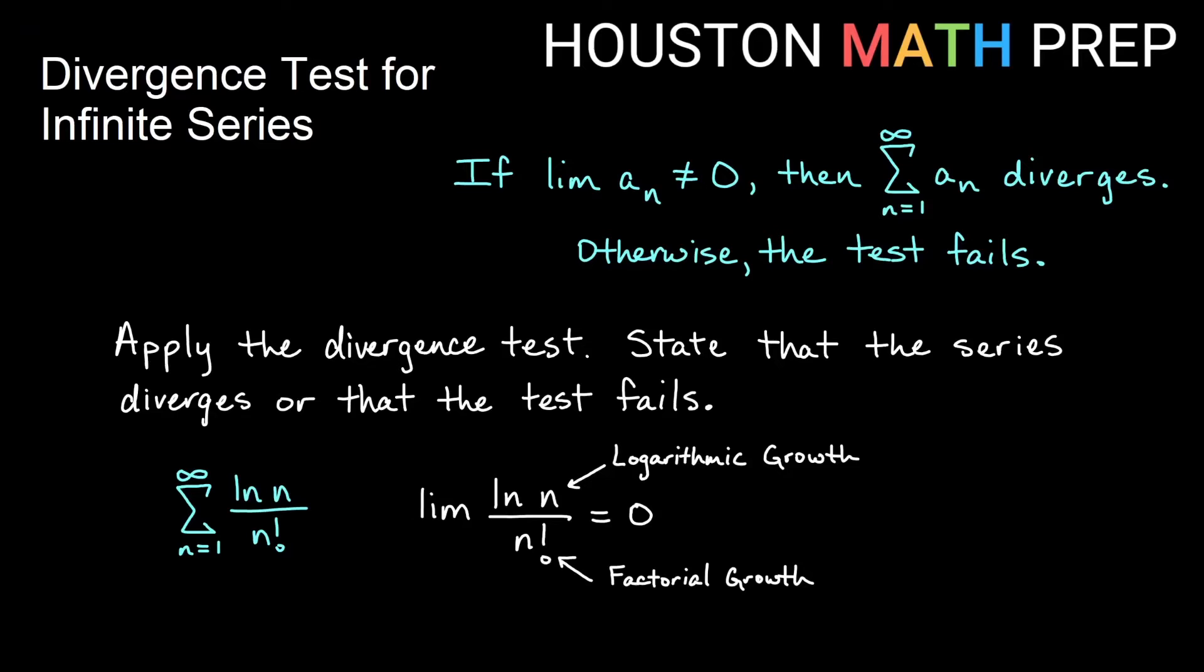But with the divergence test, when the limit is 0, we get that the test fails. We only get something from the divergence test when the limit is not 0. So here the divergence test fails on this particular sum. We would not know just by using the divergence test.